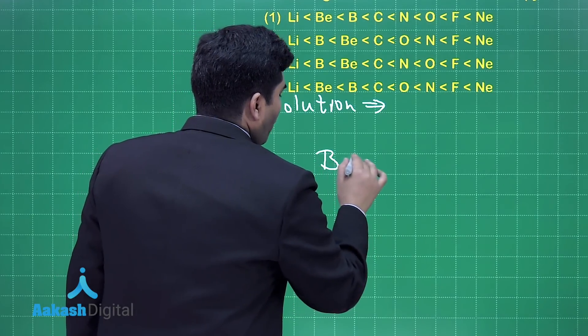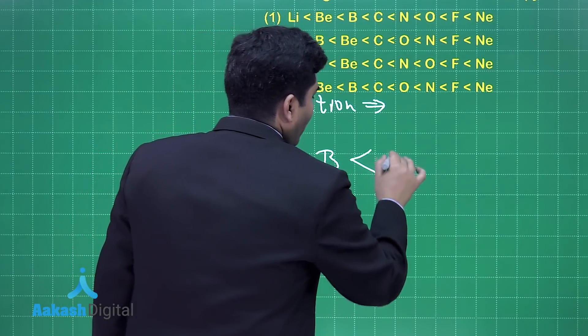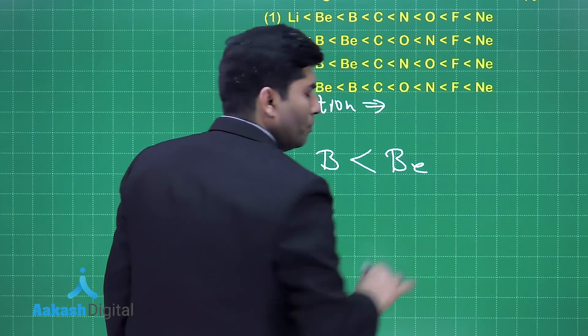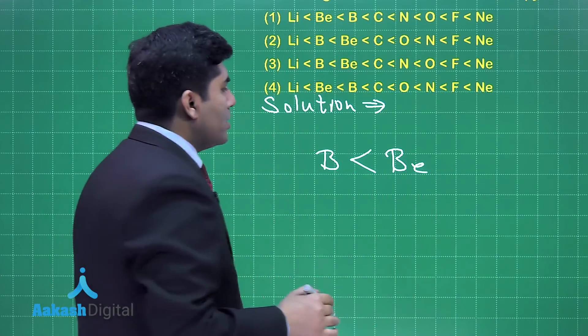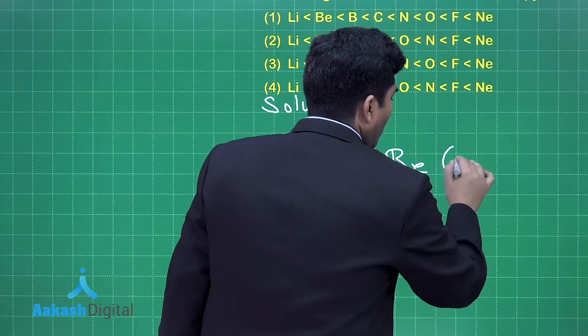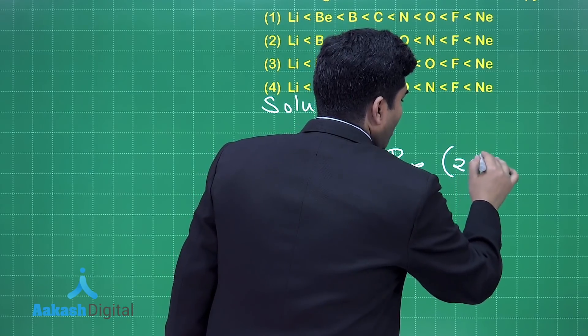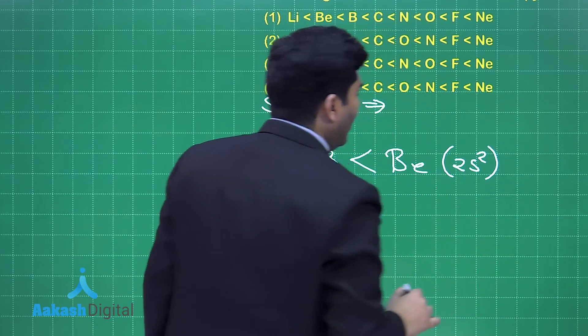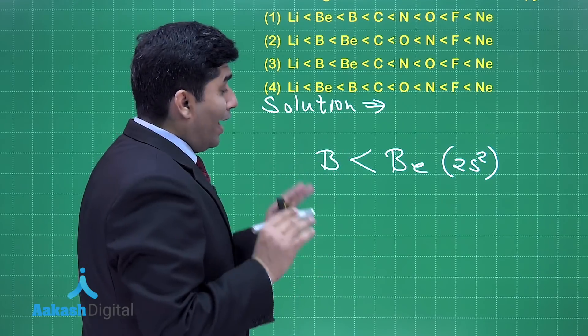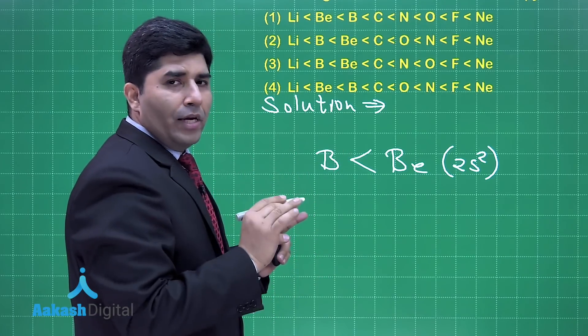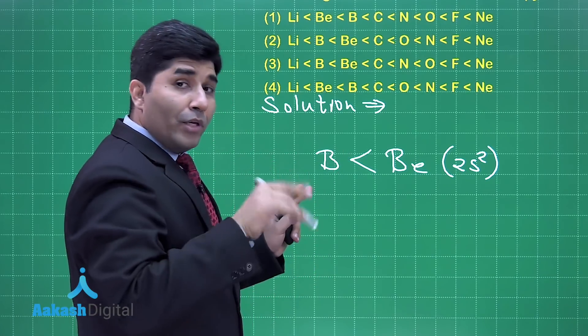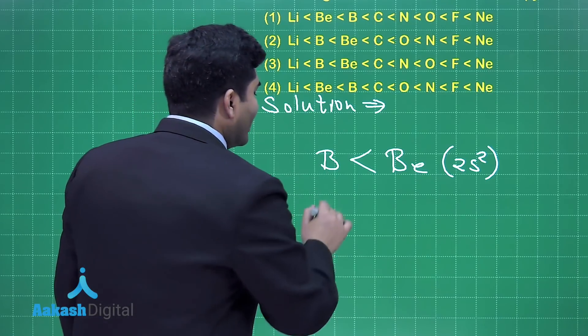The ionization energy of boron should be greater than beryllium, but this is not correct. Why? Because in beryllium, the 2s subshell is completely filled, so beryllium has more ionization energy than boron. There is one more exception.